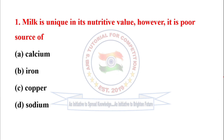First question: Milk is unique in its nutritive value, however it is a poor source of — the correct option is option B, iron.